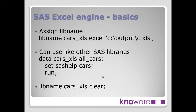A couple of things to bear in mind on how to use this. How do you assign the lib name to point to that Excel spreadsheet? That's pretty straightforward. You see the lib name statement — lib name carsxls — we use the Excel keyword to tell it we're writing to an Excel spreadsheet, then point to the actual file, in this case c.xls. Once done, we can use that Excel lib name just like any other SAS data library. There's a data step: data carsxls.allcars, setting the cars dataset, which creates a worksheet called all_cars. Very importantly, at the bottom, clear the lib name — that frees up the Excel spreadsheet to be available to Excel or other users.